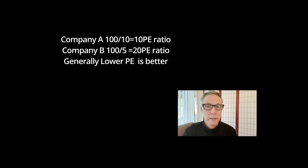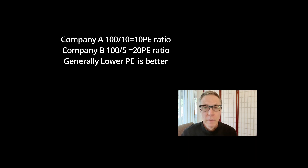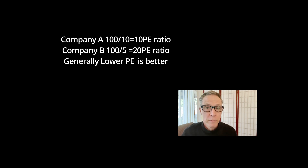Let me give you an example. Company A has a share price of $100 per share and earned $10 per share over the last year, so this would have a trailing P/E ratio of 100 divided by 10, or 10. We may want to compare it to Company B — in the same industry with a similar growth rate — which also has a stock price of $100 per share, but their trailing earnings are $5 a share, giving a P/E of 20.